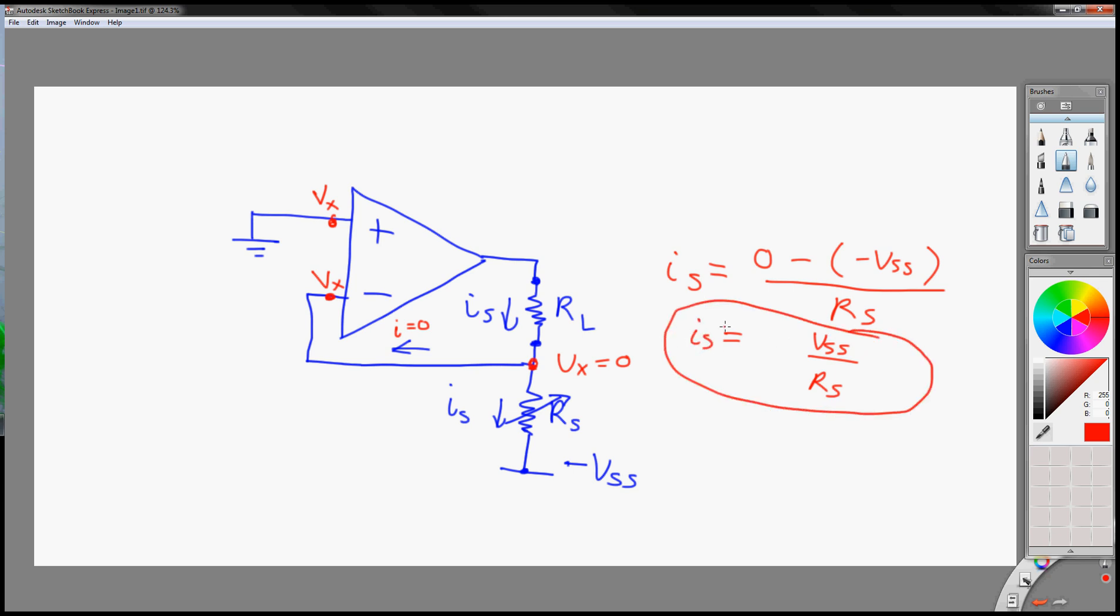And that's how you can create a current source. Another thing you might want to do is put a bias resistor here to compensate for any non-linearity of the op amp.